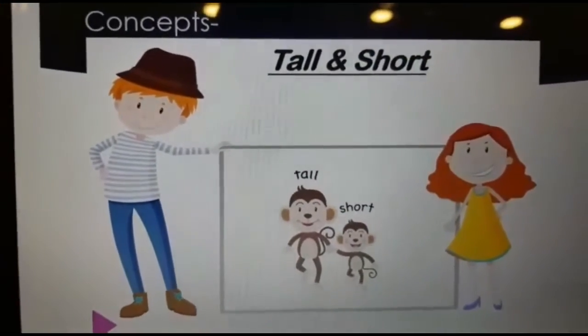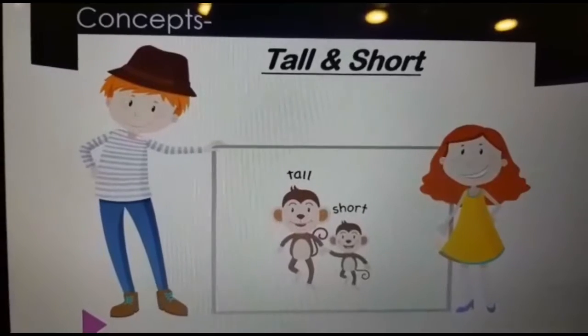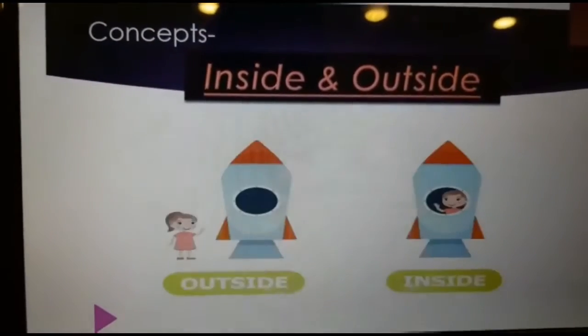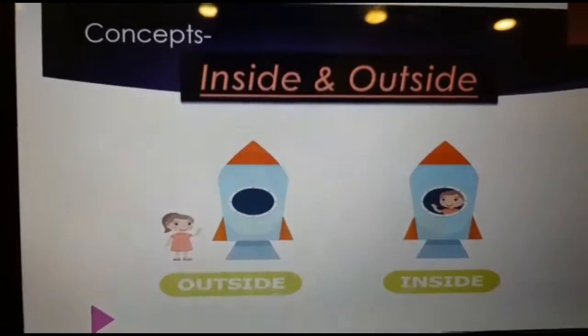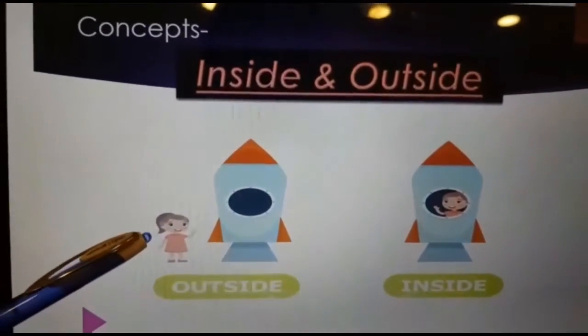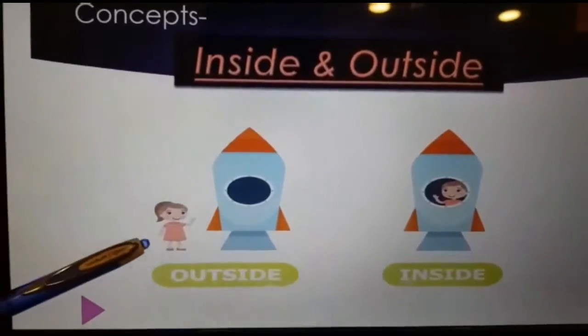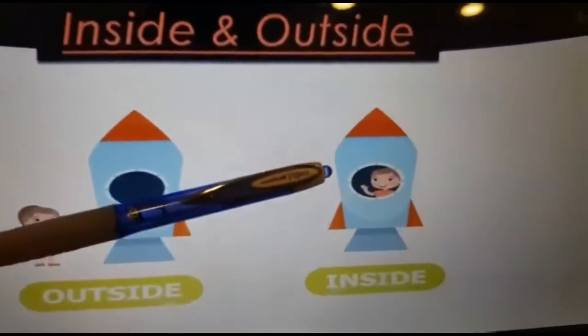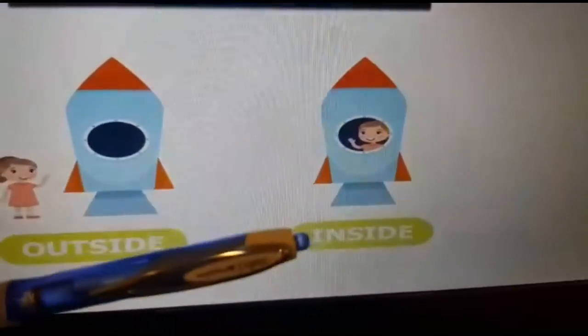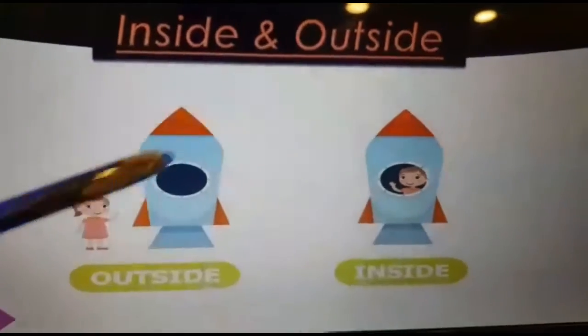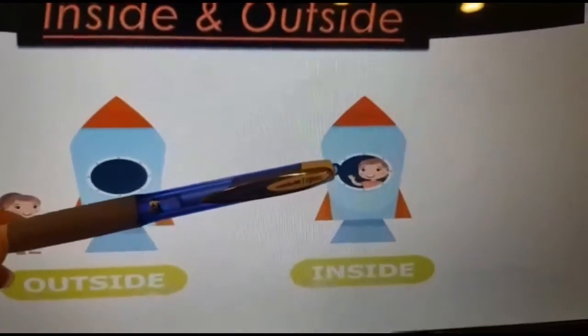That's it for the tall and short concept. Let's see what's next — inside and outside. If you notice here, the girl is outside the rocket; she's not in, she's out. But on this side, the little girl is inside the rocket; she's not out. Do you see the difference? Here she's outside, here she's inside. This is the third concept we're going to see.